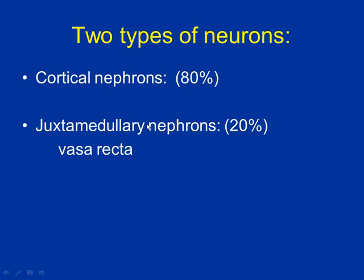Two types of nephrons — not neurons, nephrons. First: cortical nephrons. Where do you think most of these are? In the cortex — the outer edge. About 80% of your nephrons are cortical nephrons.